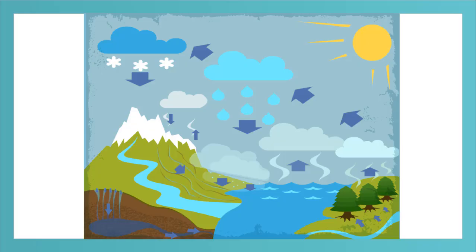In this picture, these arrows represent evaporation from water, transpiration from plants, and sublimation from snow.